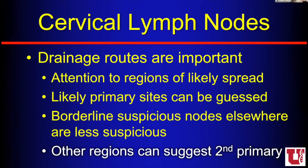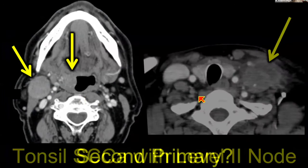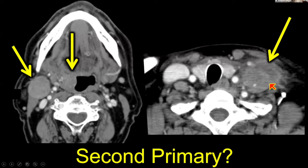The fourth reason drainage is important: other regions of lymph nodes might suggest a second primary. If I have a palatine tonsil squame that doesn't cross midline but I have an obvious pathologic node on the other side — that doesn't make sense in this lymphatic drainage pattern and suggests there might be a second primary. We sometimes call nodes in the left supraclavicular fossa a signal node or Virchow node — it may signal a primary below the clavicles in the chest or abdomen. So anytime I see a big pathologic node in the left supraclavicular fossa, I'll do a CT of the chest, abdomen, and pelvis.